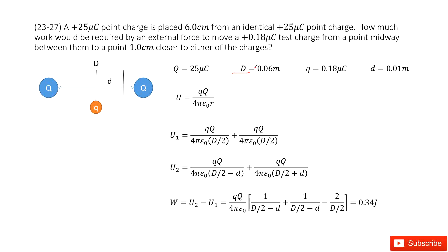And they are placed a distance 6 cm apart, so D is given. And also we need to know how much work would be required by an external force to move another point charge - we call it test charge, little q - at 0.18 microcoulombs, from a point midway between them to a point 1 cm closer. So the distance it moved is just small d.